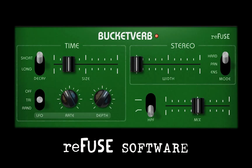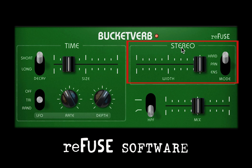Moving over to the right side of the panel, we've got the Stereo and Mixing controls. The Stereo section controls the panning of the six delay taps. When the slider is set to the minimum, all taps are panned to the center, resulting in a mono reverb effect. When the Width slider is set to maximum, alternating taps are hard panned left and right, resulting in a wide stereo spread, even with a mono input signal.